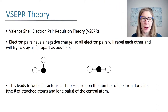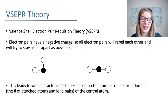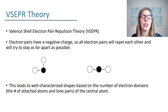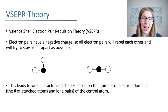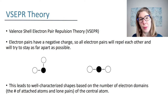VSEPR theory sounds big and scary because it stands for valence shell electron pair repulsion theory, but really it's quite simplistic. What it says is that there are electrons in bonds and also electrons that make up lone pairs, and that these pairs of electrons — whether they're bonded pairs or lone pairs — don't want to be anywhere near each other. They spread out to get as far apart from each other as possible because electrons repel each other.